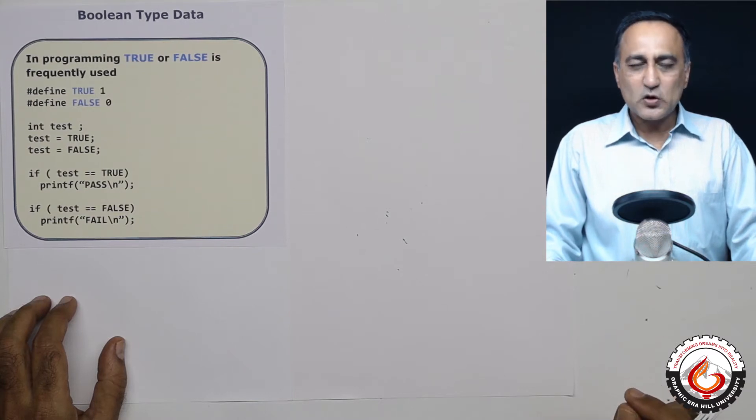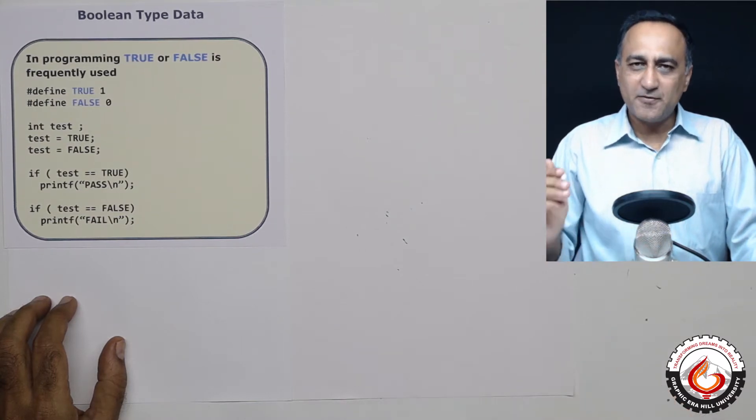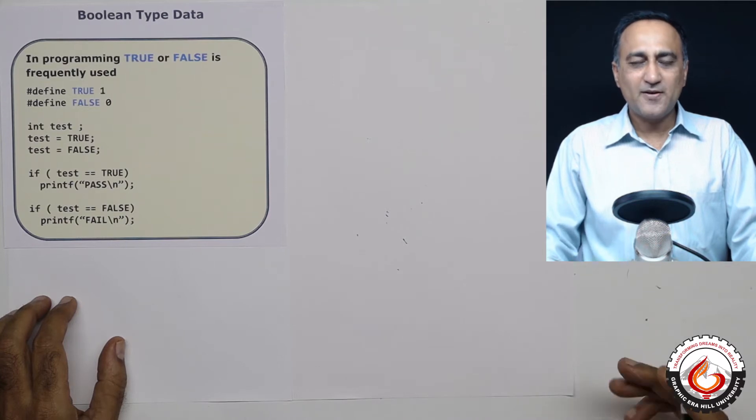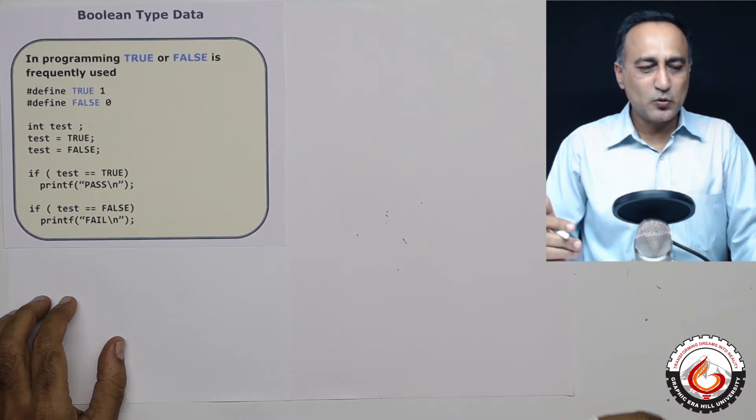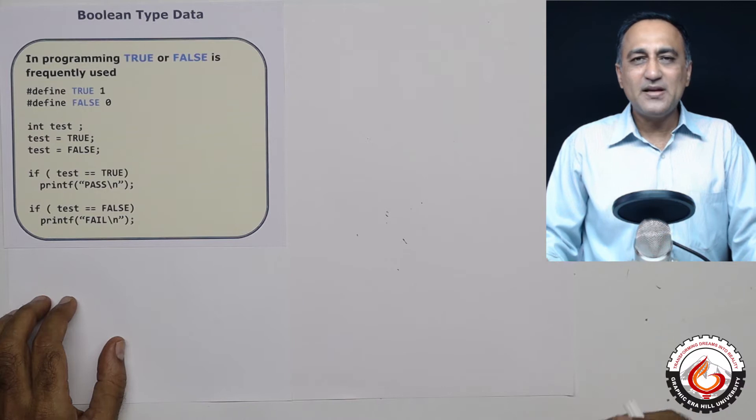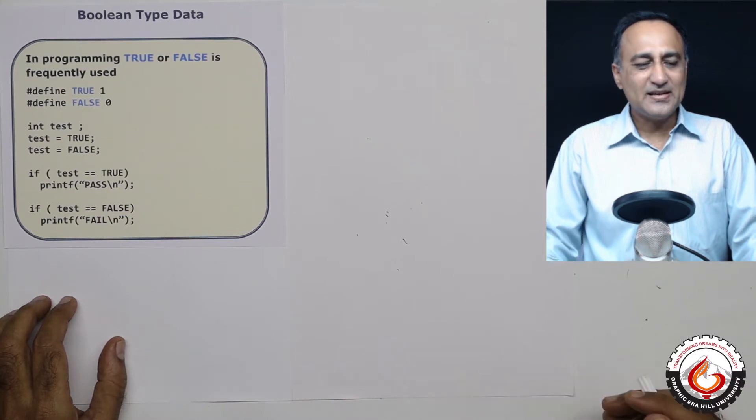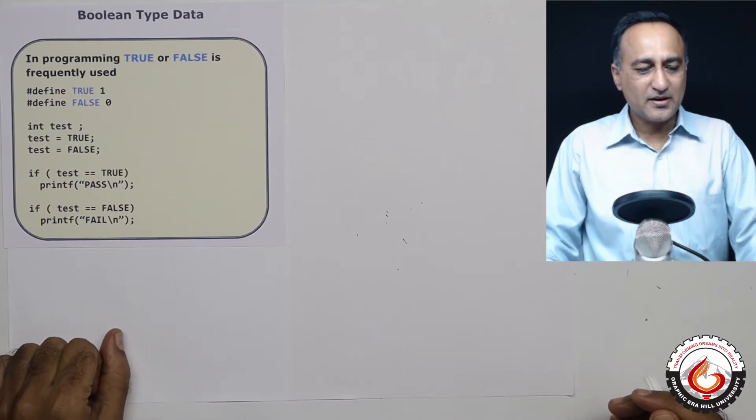So in programming, this concept of true and false is very frequently used. In fact, a lot of languages have this Boolean type of data. But I believe in C99, this Boolean data type was really introduced.